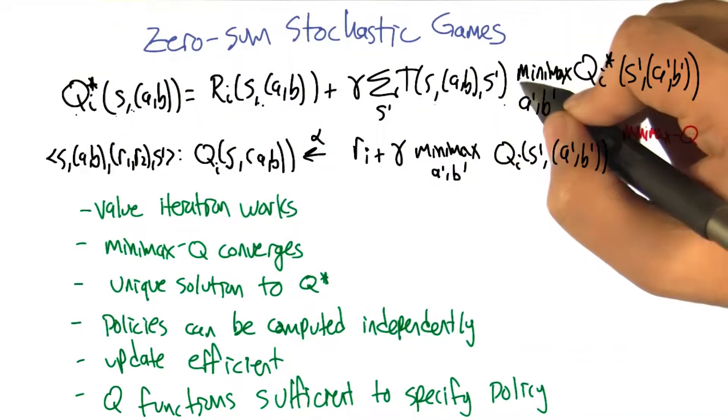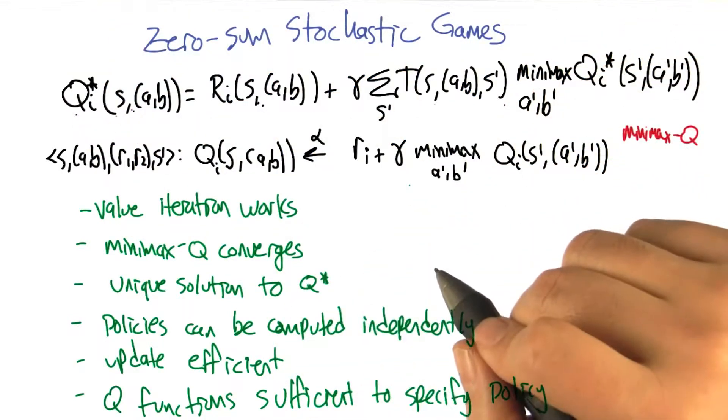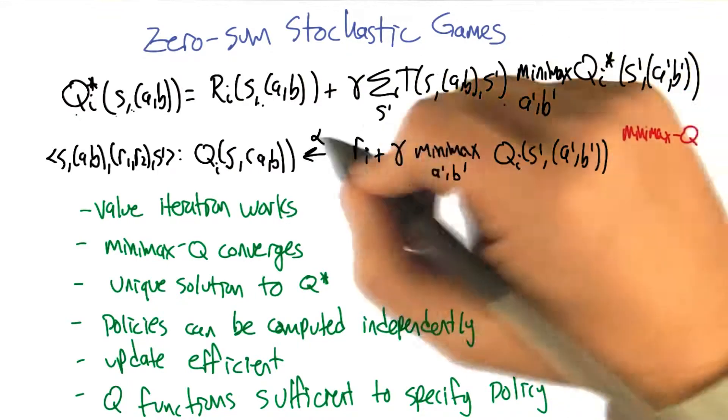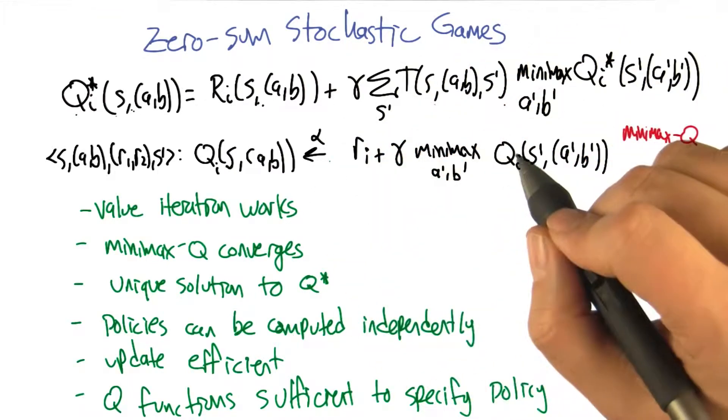The Q star that's defined by these equations is unique. So we iterate it and we find it and there's just that one answer.